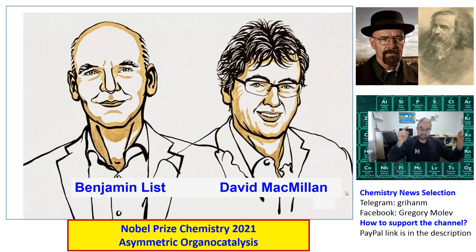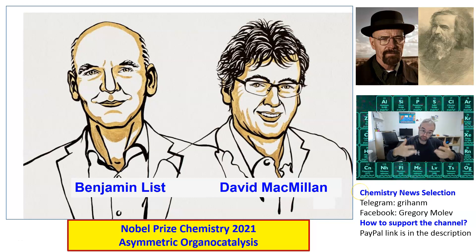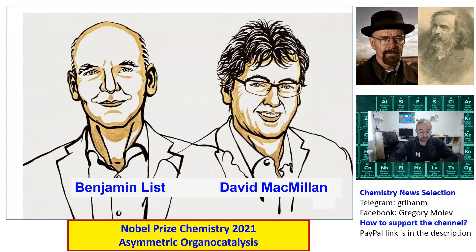Hello everyone, my name is Greg. This is the Chemistry News Selection channel, and today I'm going to talk a little bit about the Nobel Prize in Chemistry, which was given to Benjamin List and David McMillan for asymmetric organocatalysis.